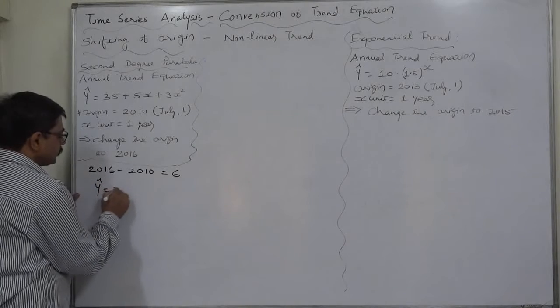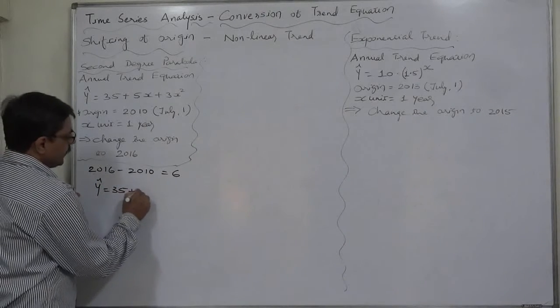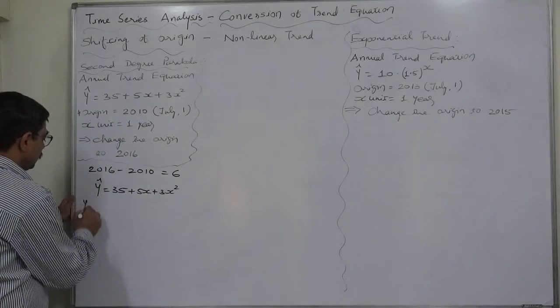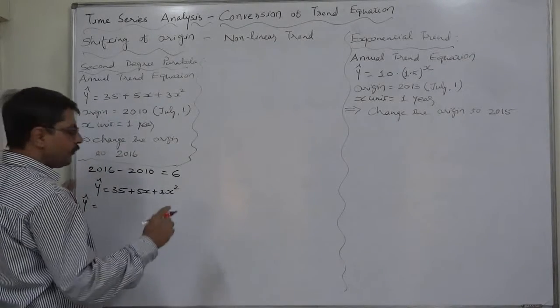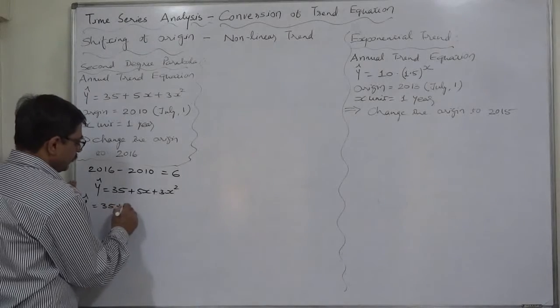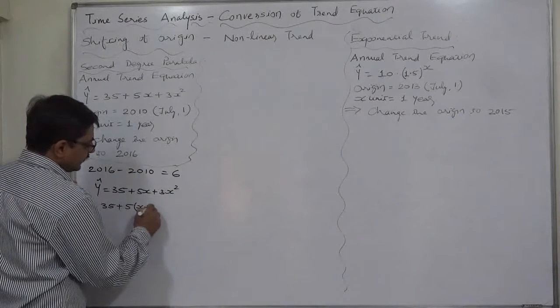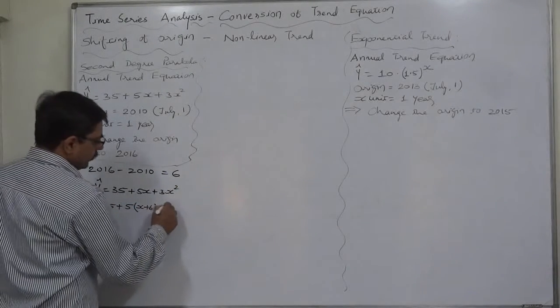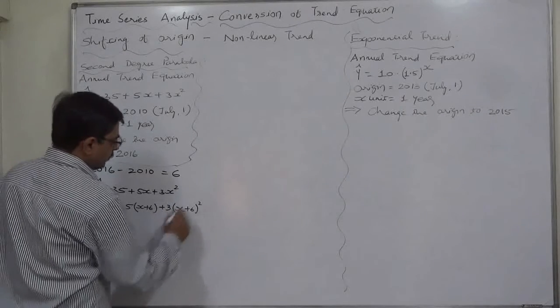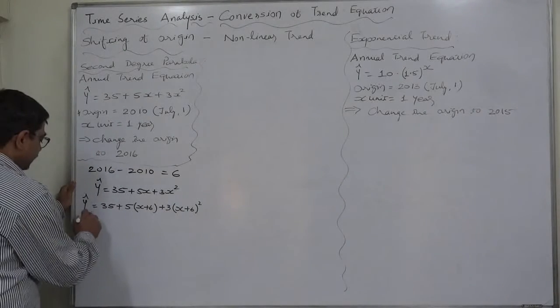Estimated y equals to 35 plus 5x plus 3x squared is the original trend. So now we are going to move forward by 6 years. So it will be now 35 plus 5 into x plus 6 because 6 is positive plus 3 into x plus 6 the whole square. Let's simplify it.